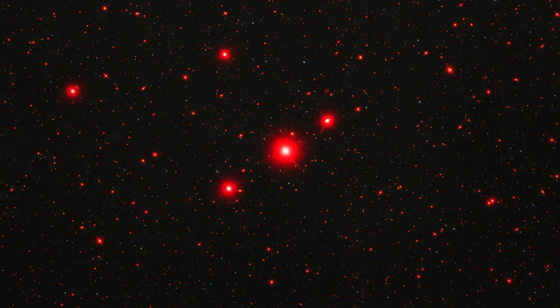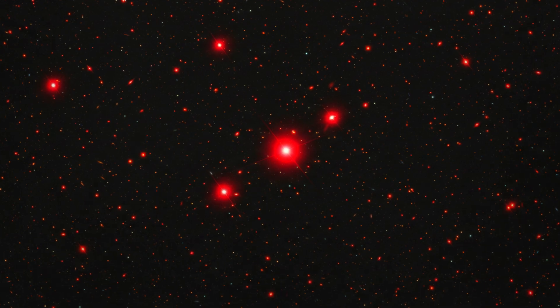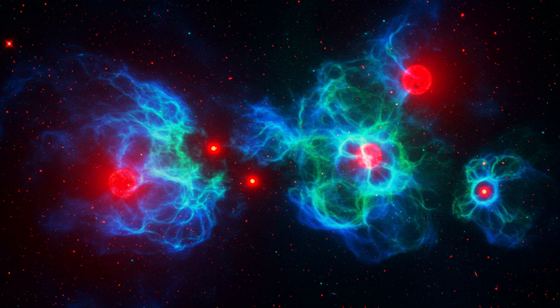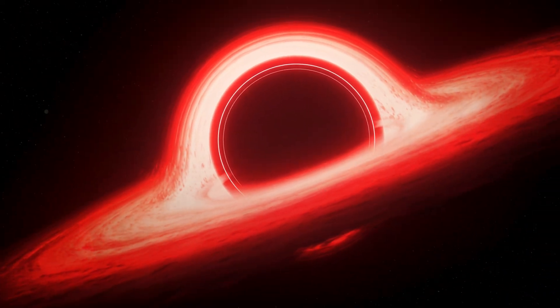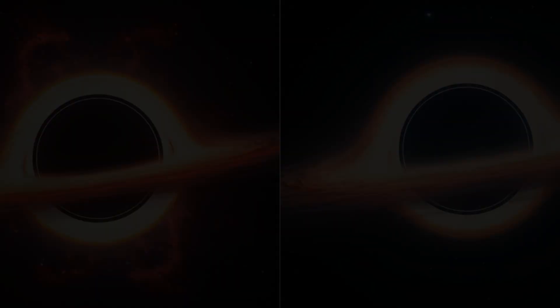At first glance, they might look like small galaxies. But their properties don't quite fit. Some are far too bright for their size. Others emit unusual radiation patterns. And many appear to host black holes that are surprisingly massive for such early times.